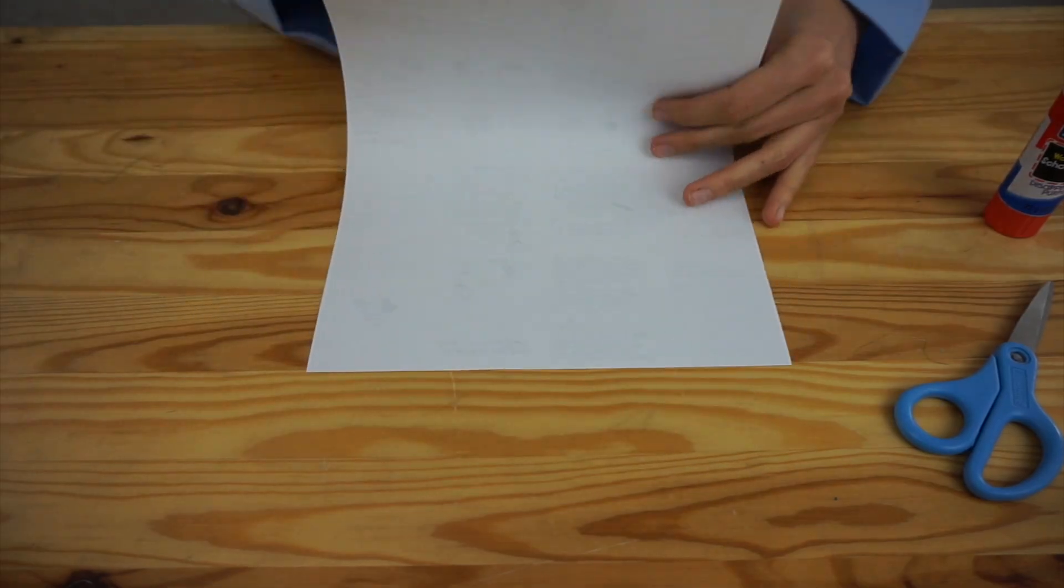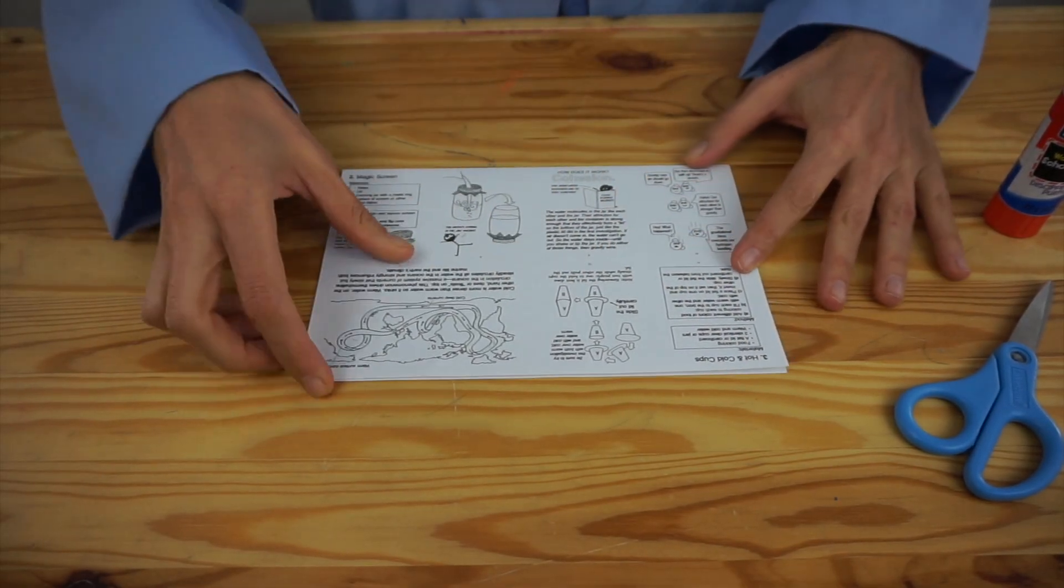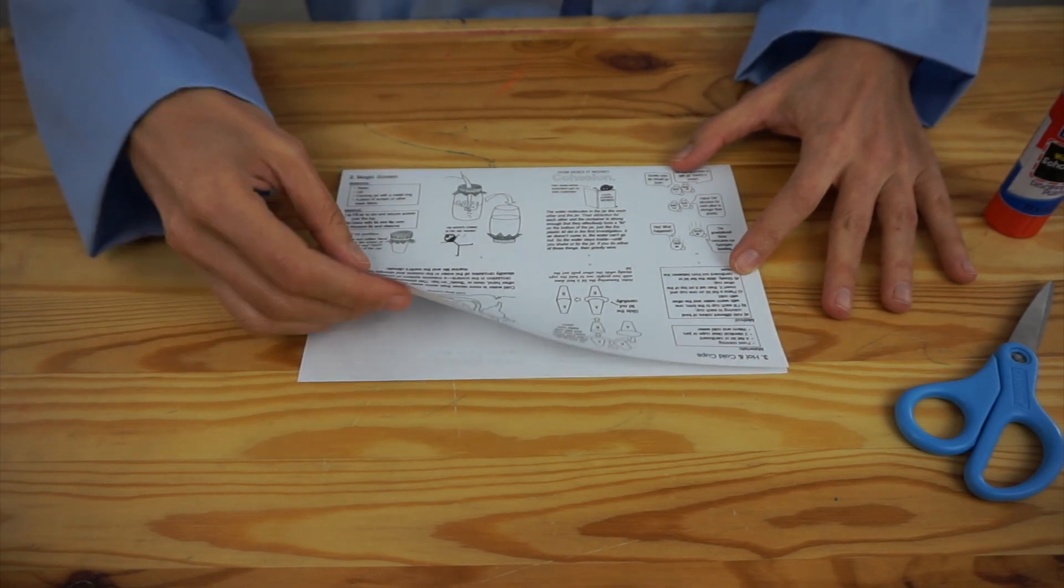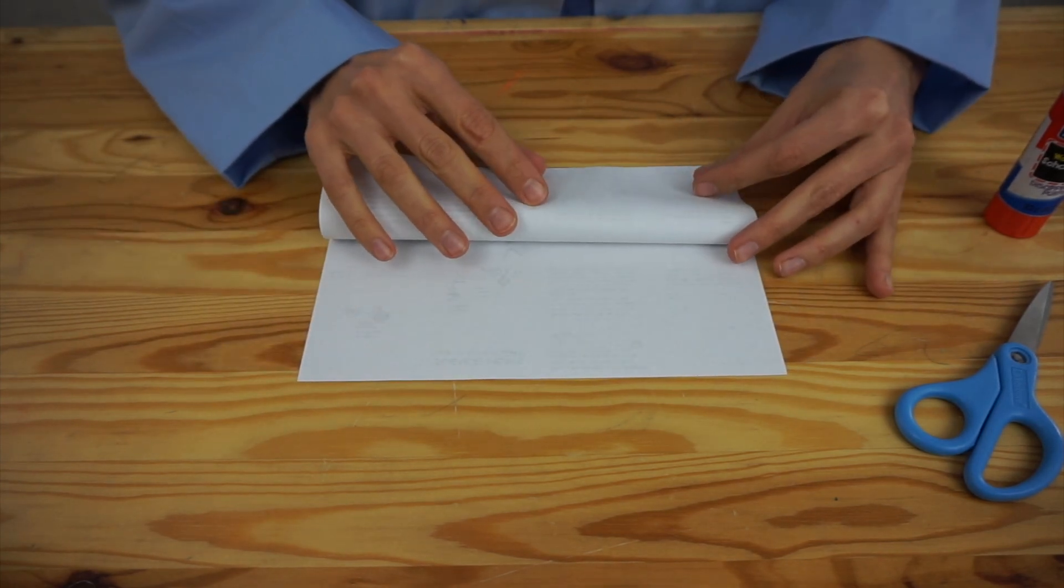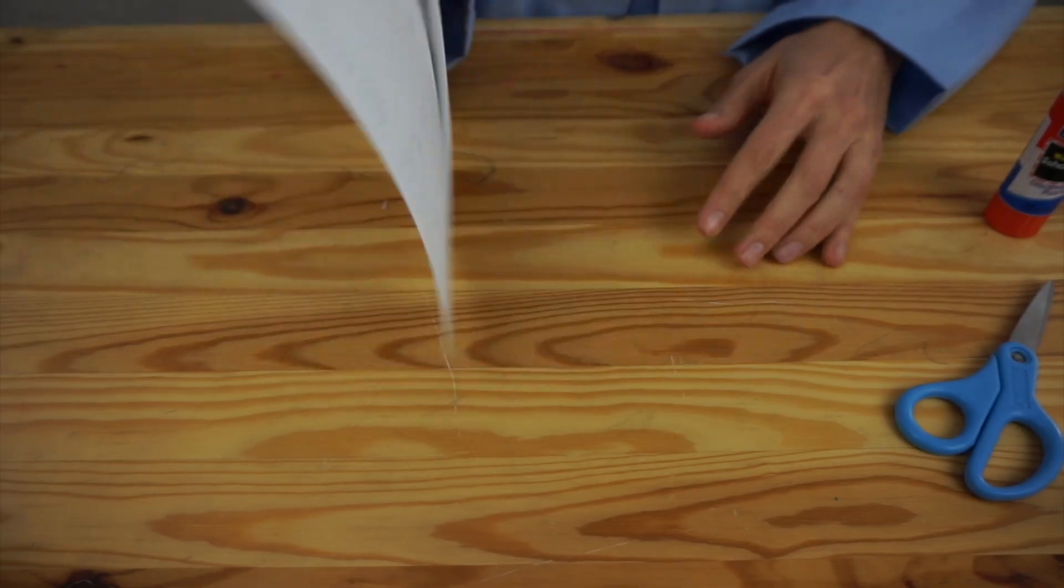Take your paper and fold it in half. You want the printed side to be on the outside. Then fold each edge down into the middle, so that you divide your paper into four equal parts.